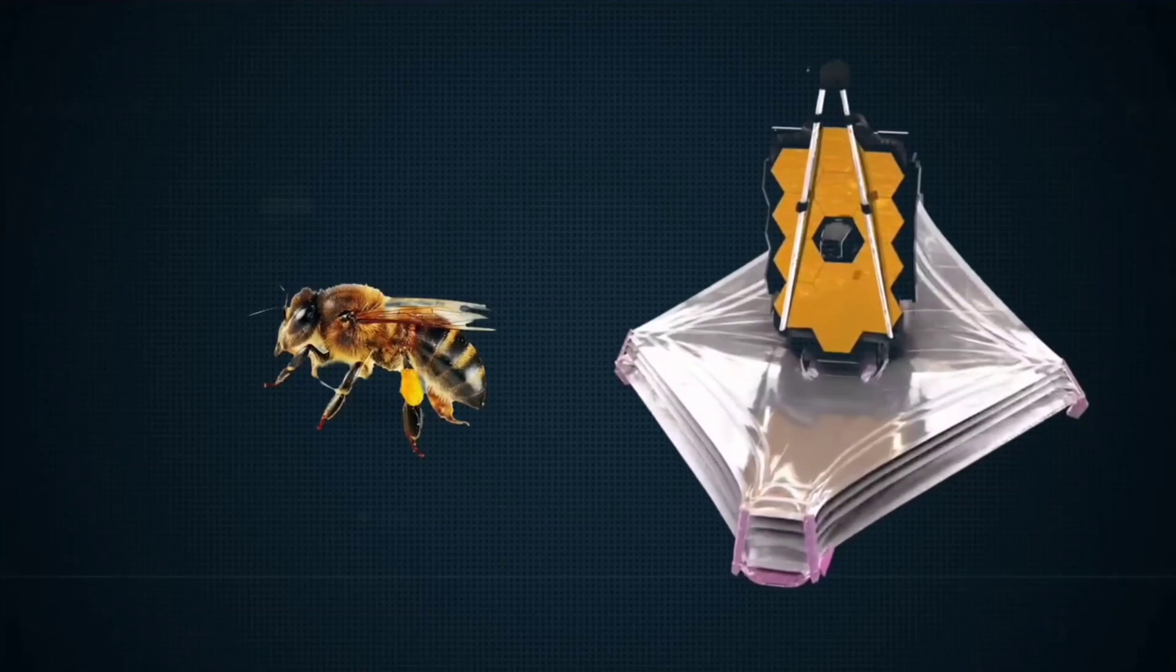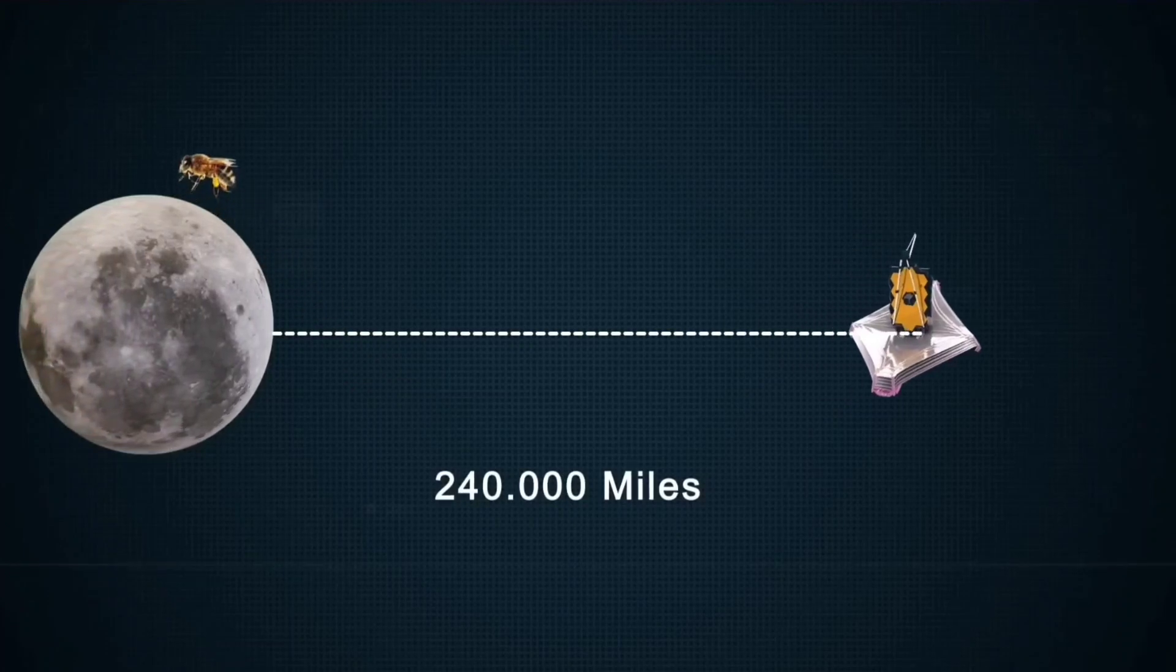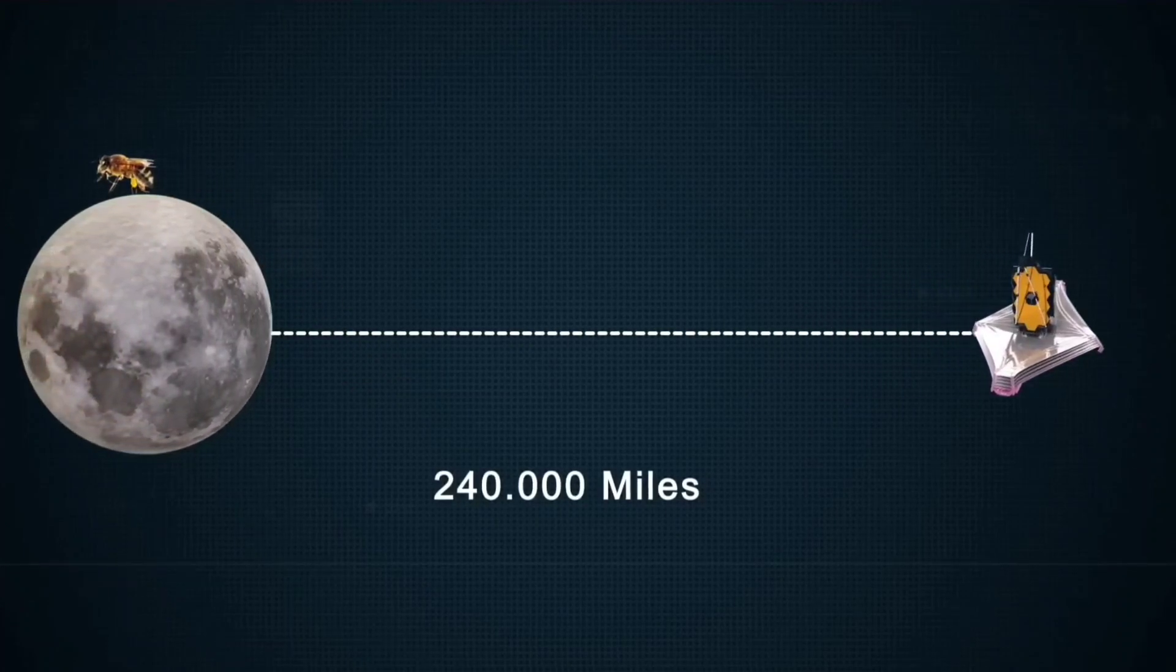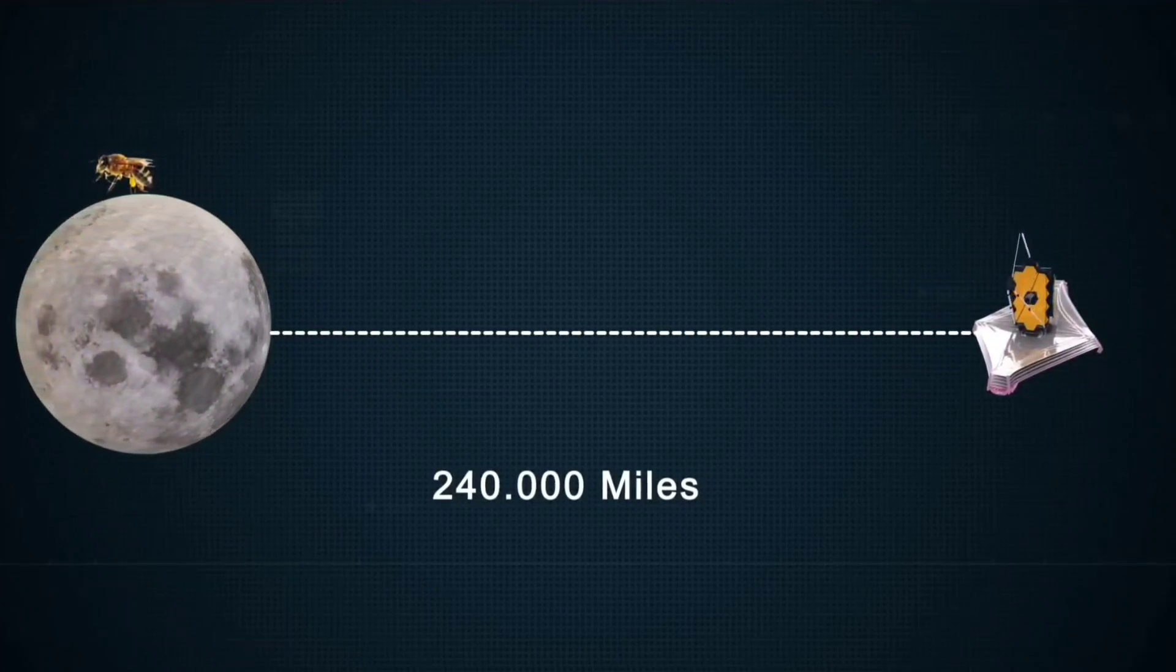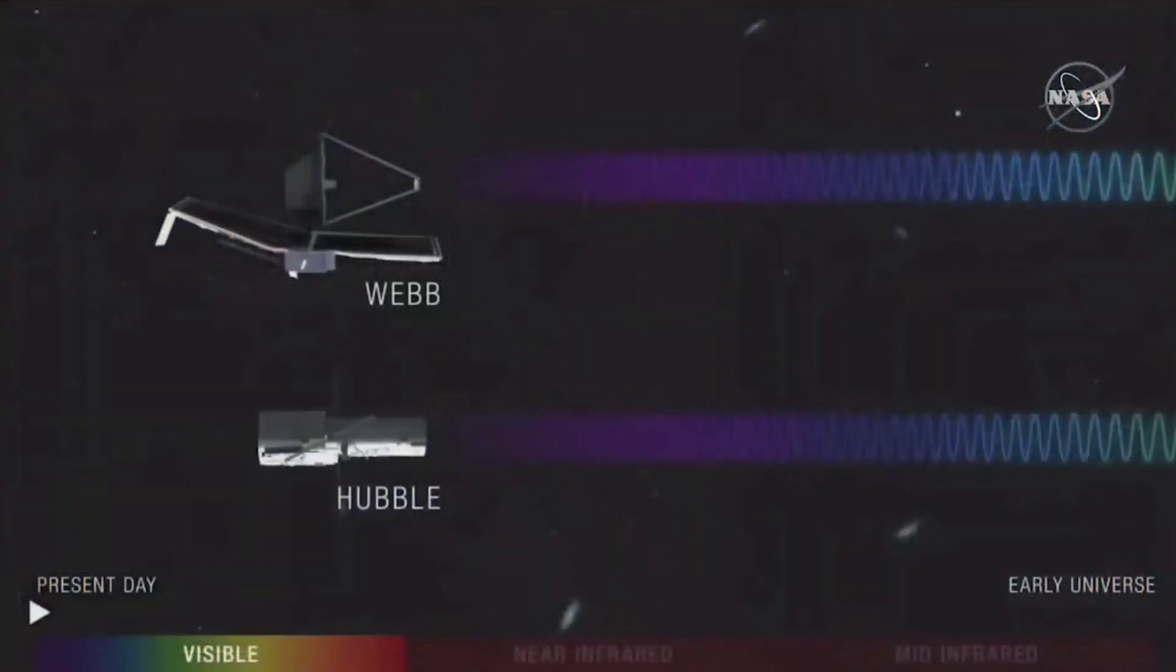According to NASA, this telescope is so powerful that even if you were a bumblebee 240,000 miles away, the distance between Earth and the moon, we could see that, said NASA Goddard Space Flight Center senior project scientist John Mather.